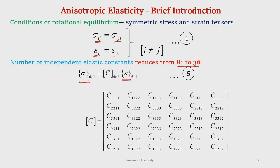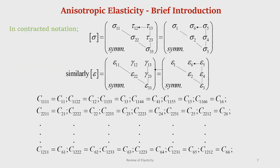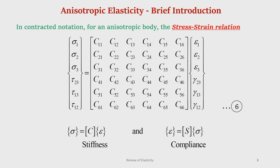For symmetric stress and strain tensors, we need 36 independent elastic constants to characterize a material. Using contracted notation, C_1111 is written as C_11, C_1122 as C_12, and so on. In contracted notation, sigma_11, sigma_22, sigma_33 are written as sigma_1, sigma_2, sigma_3. The 6 stress components are related to 6 strain components by 36 independent elastic constants.